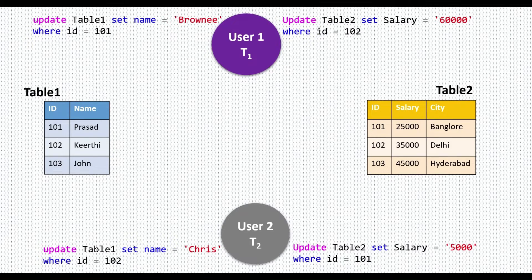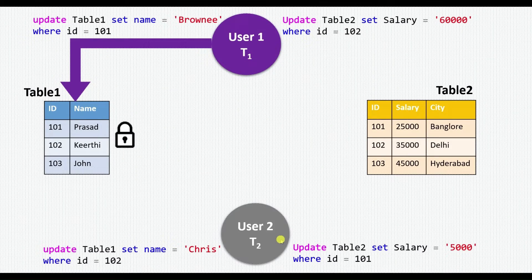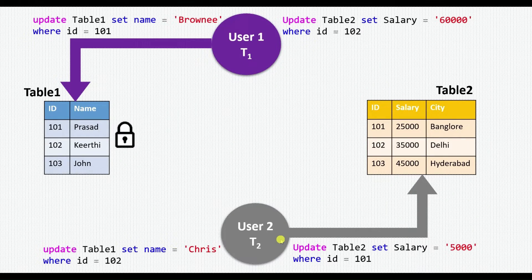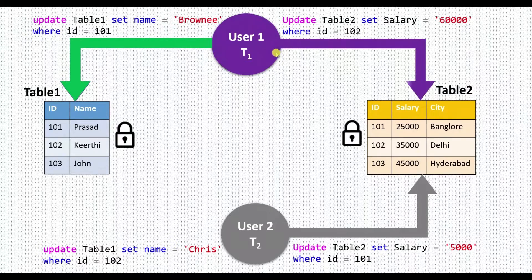Transaction T1 starts first, updating table1. Since no other transaction has acquired a lock on table1, user1 is allowed to place an exclusive lock on table1. Then T2 starts updating table2, and since no other process has acquired a lock on table2, user2 is allowed to place an exclusive lock on table2.